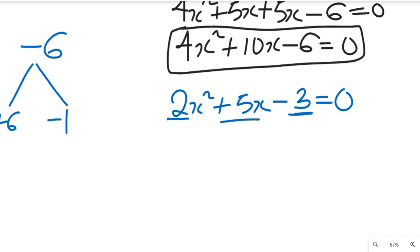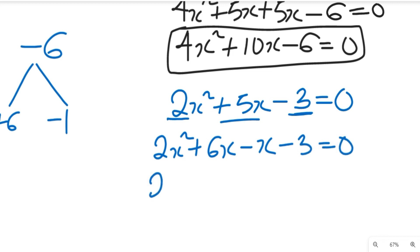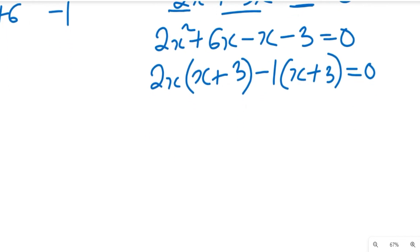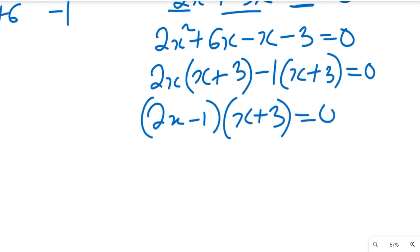So plus 6 times minus 1 gives us minus 6, and plus 6 plus minus 1 gives us plus 5. So if we do that we are going to simplify this to become 2x squared plus 6x minus x minus 3, equal to 0. So if we simplify this we'll have 2x common here, giving us x plus 3, and this will give us x plus 3, equal to 0.